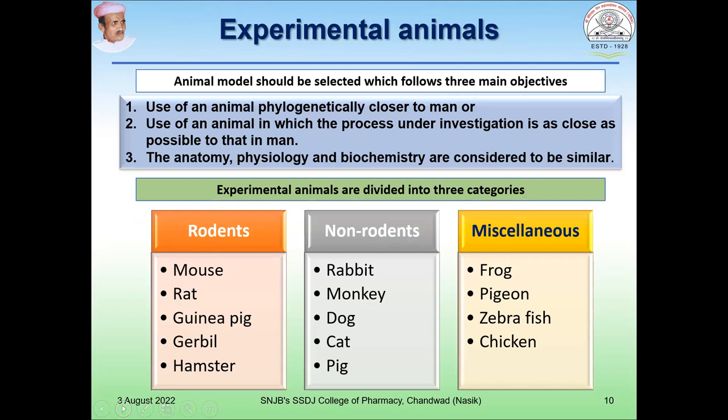Experimental animals or experimental models should be selected following three main objectives. The first is use of animals phylogenetically closer to humans, or use of animals in which the process under investigation is as close as possible to that in humans, where the anatomy, physiology, and biochemistry are considered to be similar.